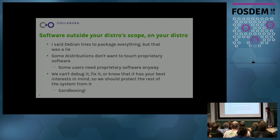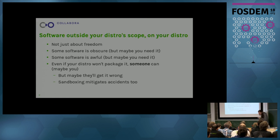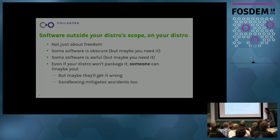Debian tries to package everything, apart from the whole free software thing. Some distributions very much want to steer clear of proprietary software, but we have to acknowledge that our users want it. Ideally we should be mitigating that and protecting the rest of the system from deficiencies in software we can't fix — and hey, we have sandboxing, good idea. Sometimes it's not even about freedom, it's about quality — some software is really niche and maybe it doesn't make sense to package it even for Debian. Some software is, to put it bluntly, really awful, but maybe you need it anyway because it does something critical for your job. Surely someone packaging it is better than nothing, particularly if you can sandbox it to mitigate if they've done it wrong.